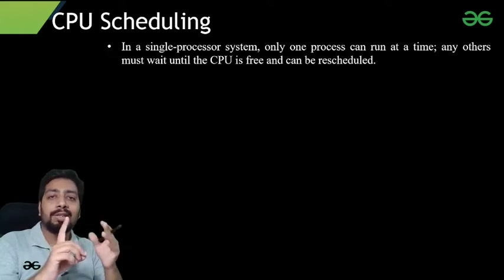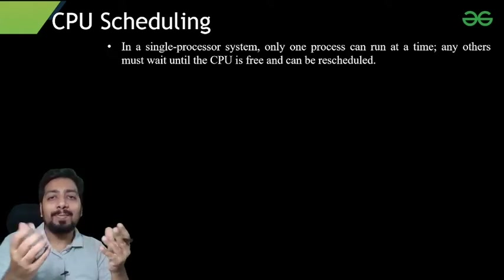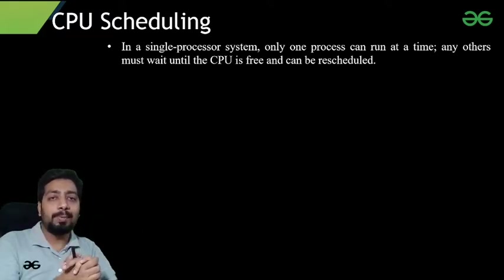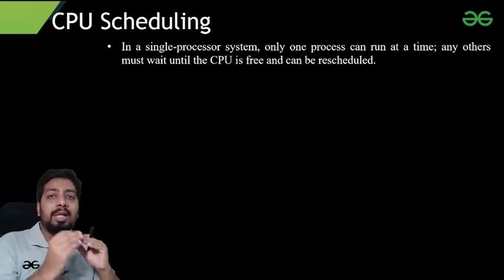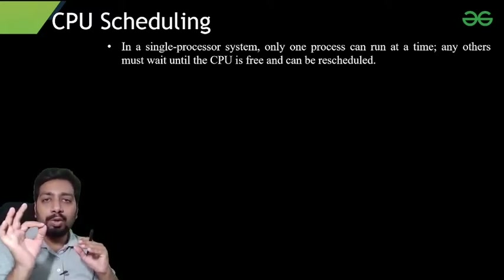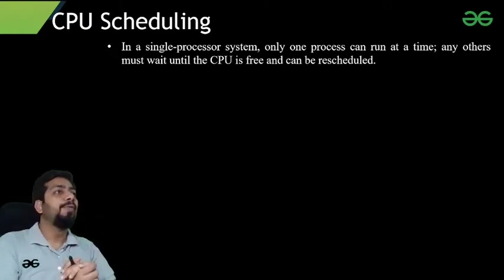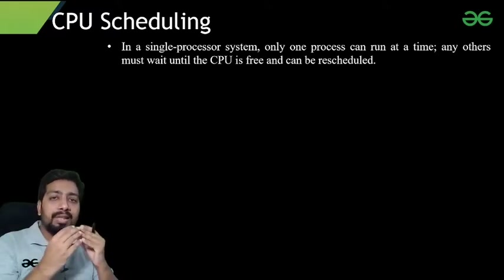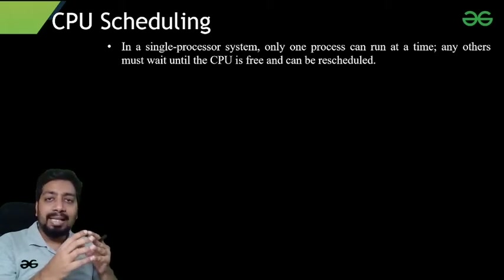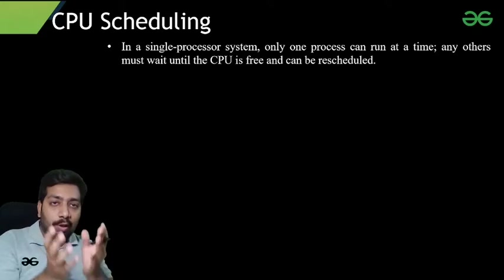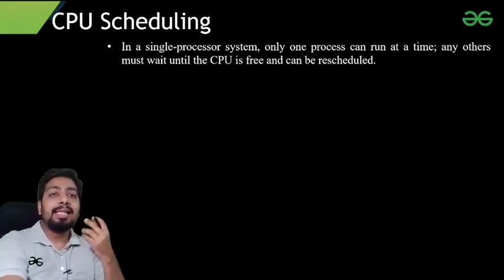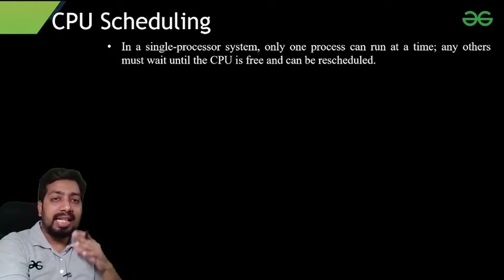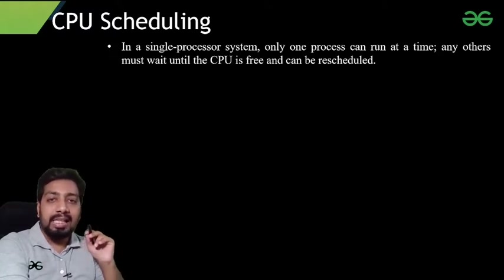There is only one question typically based on the multiprocessor system — about how it works. All other concepts we study only with respect to the uniprocessor system. We employ multiprogramming, but that doesn't mean many processes run simultaneously on the CPU. It creates the impression that many processes are running, but in reality only one process can run on the CPU at any particular time.